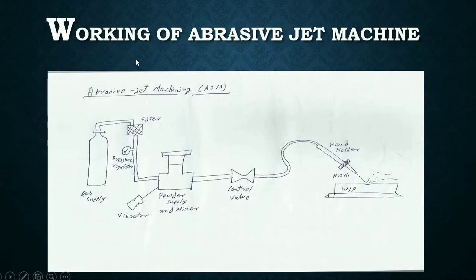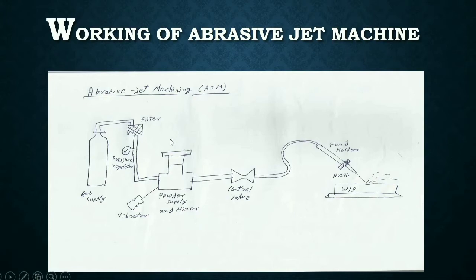Now the working of abrasive jet machining: here is a cylinder which contains high pressurized gas. This is passed through a filter, which filters dust particles, and a pressure regulator, which regulates the pressure of the gas. This pressurized gas then enters the mixing chamber where the abrasive powder is mixed with the pressurized gas with the help of a vibrator.